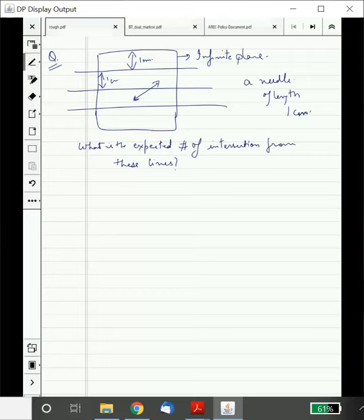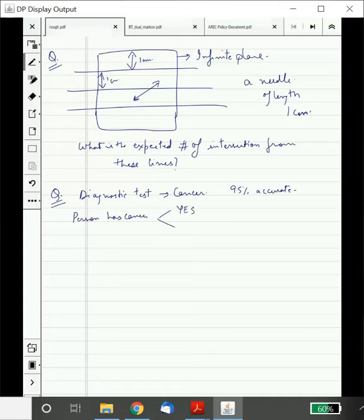All these were mathematical problems so let's take something more related to real life. Let's go to hospitals. Suppose there is a diagnostic test for cancer. That means it tells people whether they have some kind of cancer or not. It's 95 percent accurate according to the website of the test. What does it mean it is 95 percent accurate? If a person has cancer then it tells you yes that person has cancer with more than 95 percent probability and it gives you an answer no with less than 5 percent. So it tells you correctly with 95 percent.